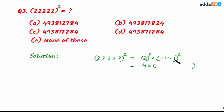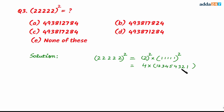To find the square of 11111, since there are five ones, we start from 1, go up to 5, then reduce back to 1: giving the pattern 1-2-3-4-5-4-3-2-1. So 4 multiplied by this gives the final answer 49382716 — wait, calculated out as 4, 9, 3, 8, 1, 7, 2, 8, 4 — meaning option C is correct.